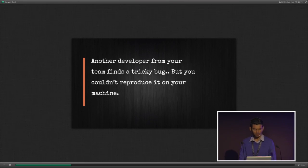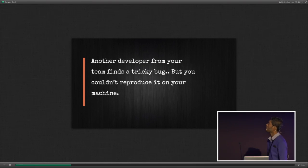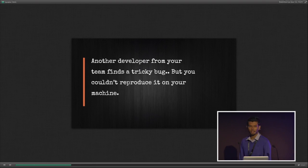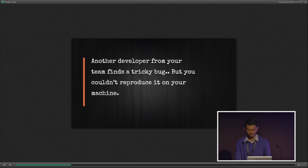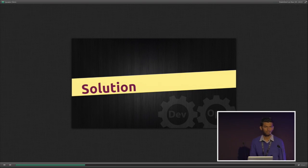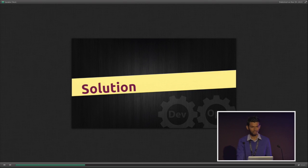Imagine a situation where another developer on your team reports a tricky bug that you cannot reproduce on your own machine. The problem here is environment inconsistency. So what's the solution? Is there a solution for this? Anyone could take a guess — any tools?